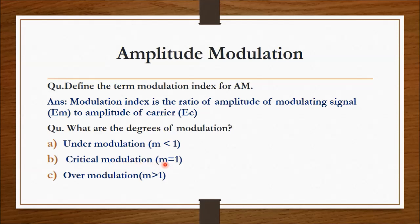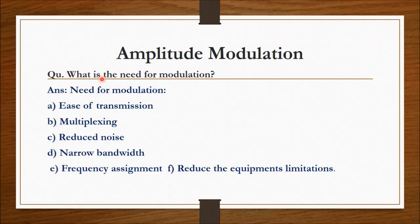Critical modulation: m equal to 1, and over-modulation: m greater than 1. What is the need for modulation? The need for modulation includes ease of transmission, multiplexing, reduced noise, narrow bandwidth, frequency assignment, and reduced equipment limitation.